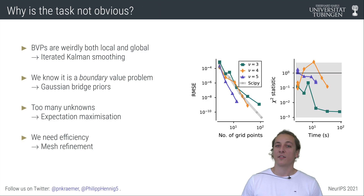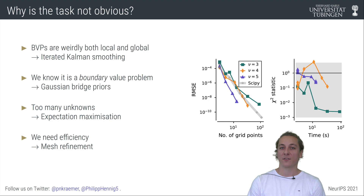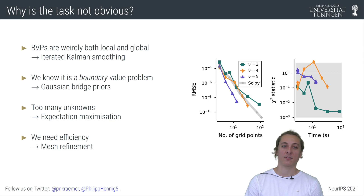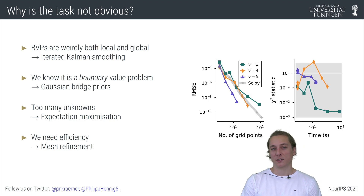Luckily there do exist some algorithms that share this mix of local and global interactions with boundary value problems. One of them is the iterated Kalman smoother, which is a Kalman filter implementation of a Gauss-Newton algorithm.